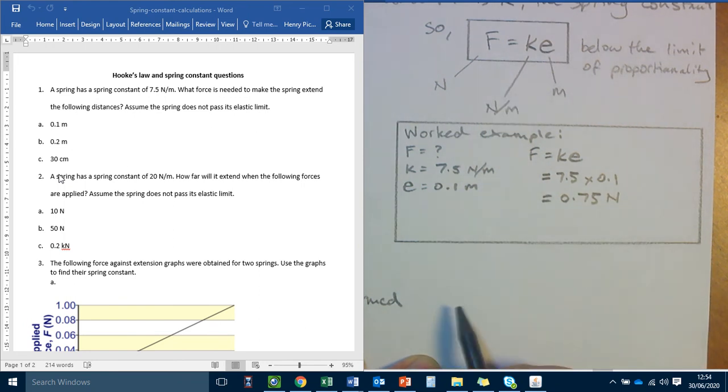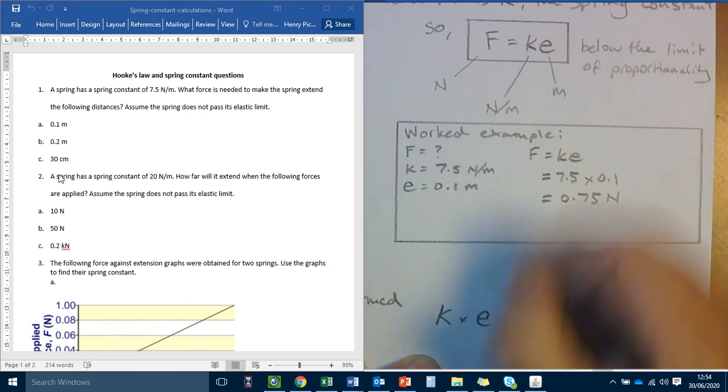But if you want to use the triangle, you can. We've got K times E. So they go together in the bottom of the triangle. And we've got F is on the other side of the equation. So it goes at the top of the triangle.